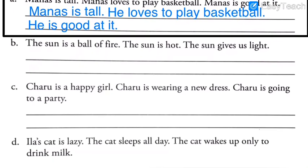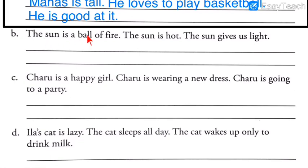The next sentence is: 'The sun is a ball of fire. The sun is hot. The sun gives us light.' The noun 'the sun' is repeated three times. We need to replace it. For Manas we used 'he' because he is a boy, but the sun is neither a boy nor a girl — it is not a human being. The sun is a big star in our solar system, so we use 'it' for the sun.